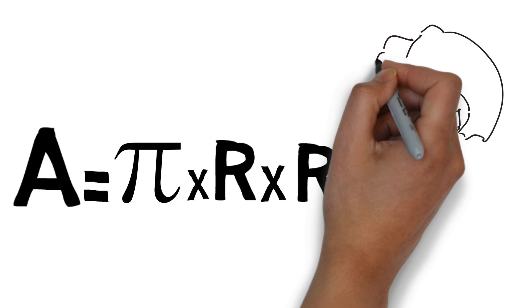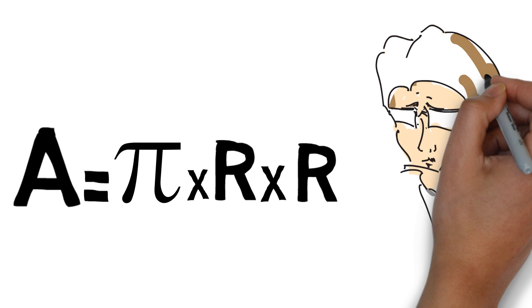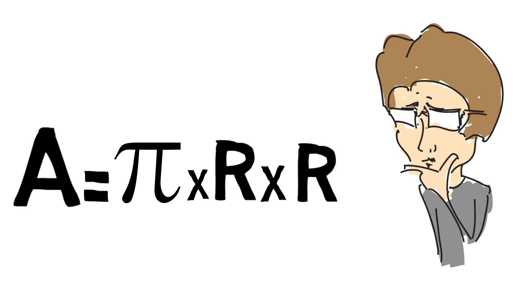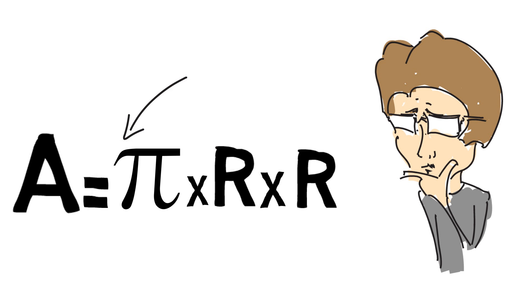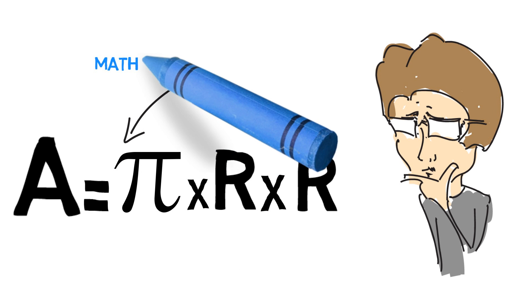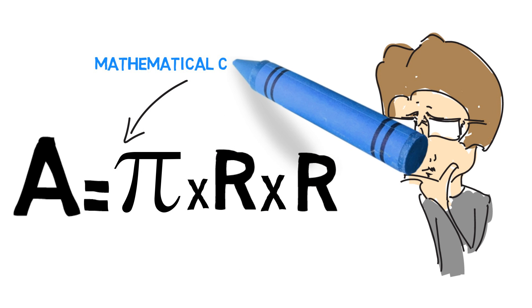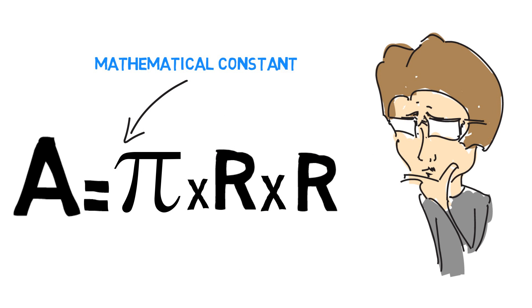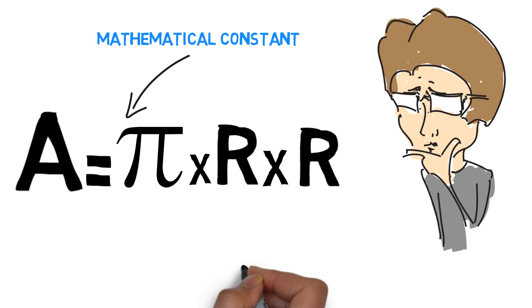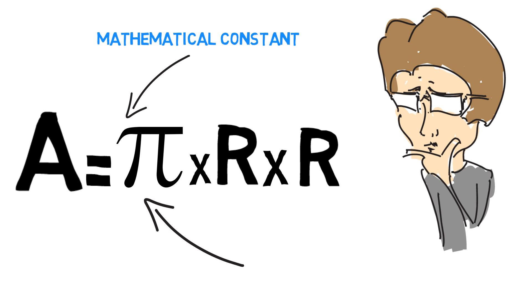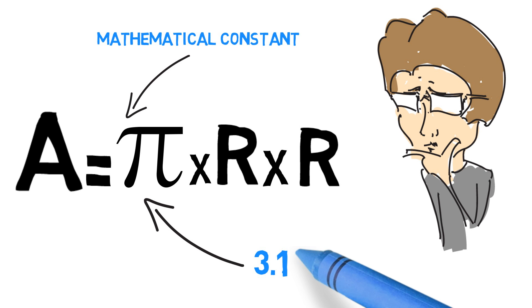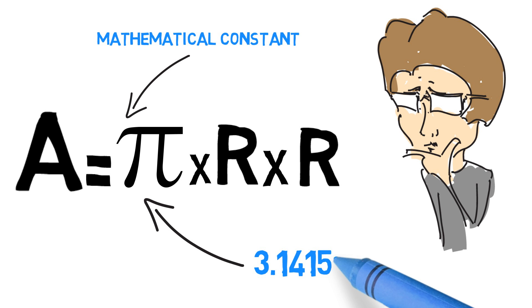Now we understand the radius of a circle, but what is this pi? Well, pi is a mathematical constant. It is represented by this Greek symbol, and its approximate value is 3.141592.